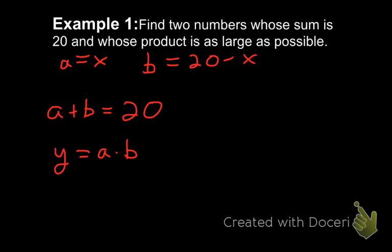Oh, looky looky. I know what A equals. I know what B equals. I can plug that into my handy-dandy equation here. So Y equals X times 20 minus X.